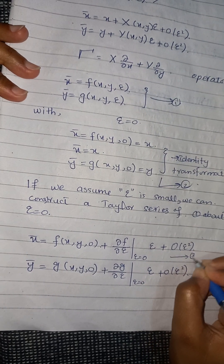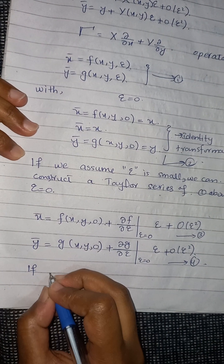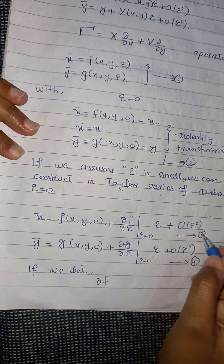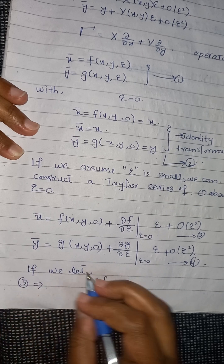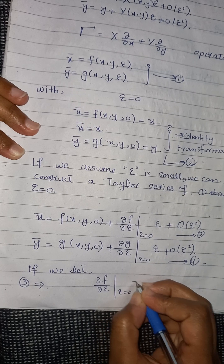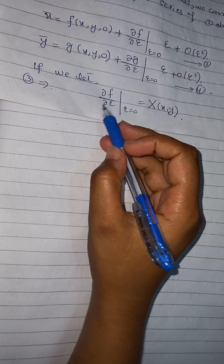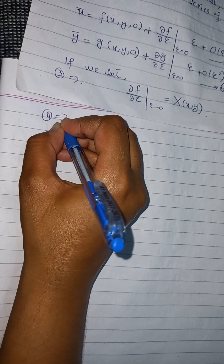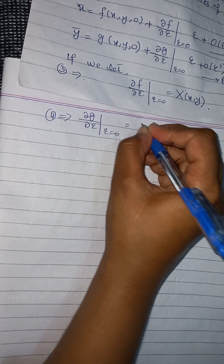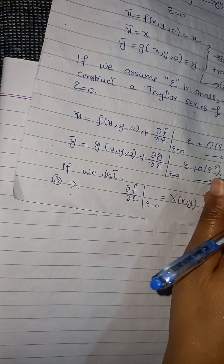From equation three, we let: partial f over partial epsilon at epsilon equals zero equal capital X(x, y). From equation four, we let: partial g over partial epsilon at epsilon equals zero equal capital Y(x, y). So equations three and four will now become simplified using these definitions.